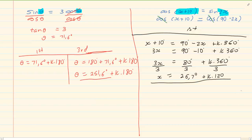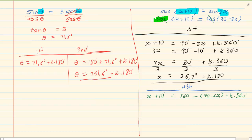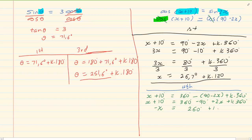Now for the fourth quadrant — because we are working with cos and the angles are unknowns, we accept it as positive. For the fourth quadrant: x + 10 = 360 - (90 - 2x) + k·360, which gives x + 10 = 270 + 2x + k·360. Taking 2x over: -x = 260 + k·360. Dividing by negative one: x = -260 - k·360.